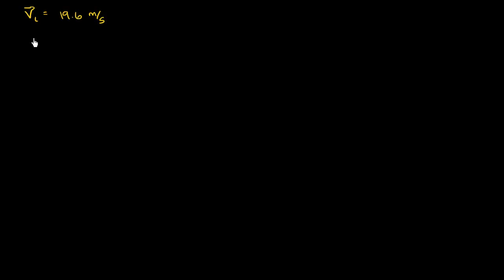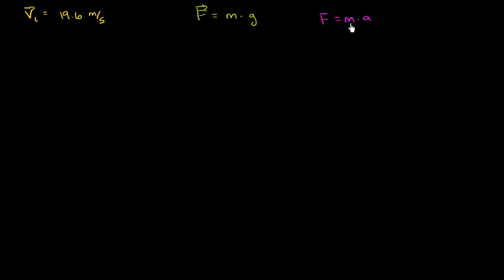We know the acceleration near the surface of the Earth. The force of gravity on an object near the surface of the Earth is going to be the mass of the object times little g — gravity on Earth — which is 9.8 meters per second squared. If you want the acceleration on Earth, you divide force by mass, because F equals ma. Dividing both sides by mass, on the left-hand side you get acceleration, and on the right-hand side you get the same quantity g.